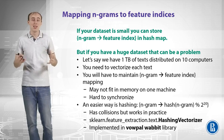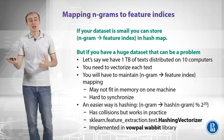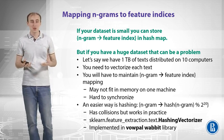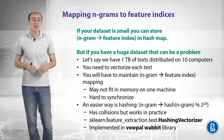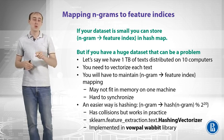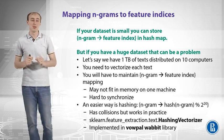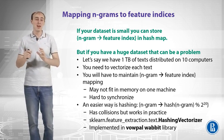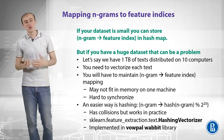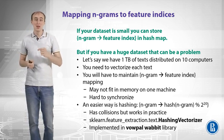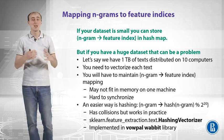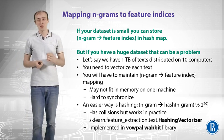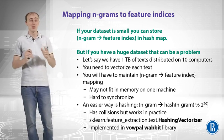For some strings the hash function can output the same value, and that is known as a collision. Hash functions have collisions, but in practice, if you take the hash value modulo 2 raised to a high power, those collisions can be neglected. This hashing vectorizer is implemented in scikit-learn — it's called HashingVectorizer — and it's also implemented in the Vowpal Wabbit library that we will overview later.